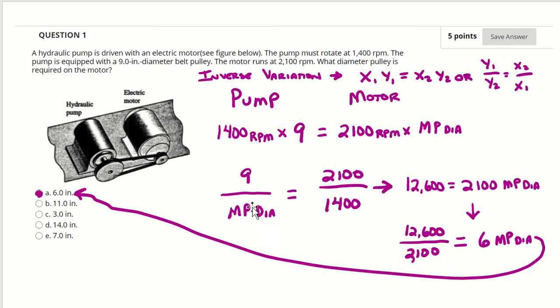So we do the calculation here. 9 times 1400 is 12,600. If we divide both sides by 2100, now we end up with a 6 inch motor pulley diameter.